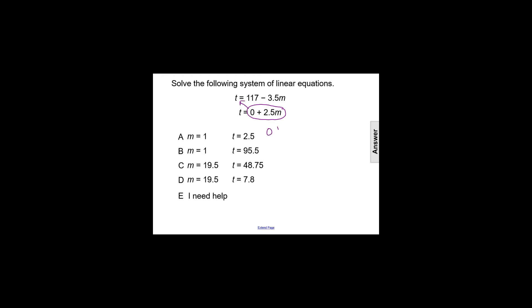We'll have 0 plus 2.5m equals 117 minus 3.5m. Now, 0 plus 2.5m is just going to equal 2.5m, so we can simplify that left side of the equation.